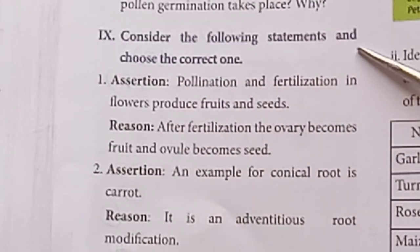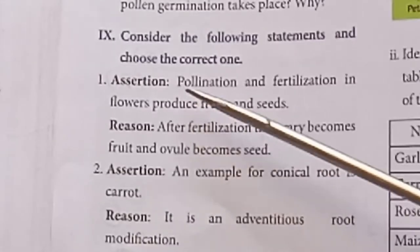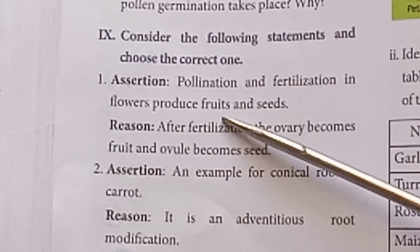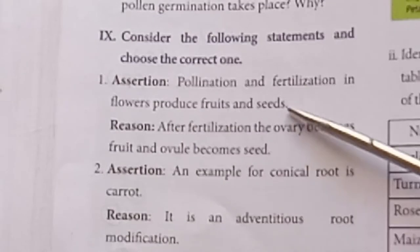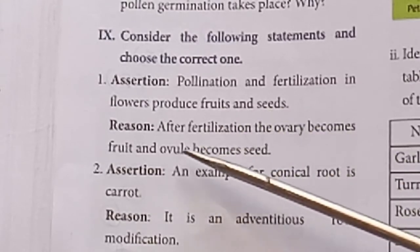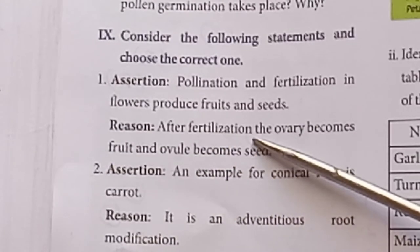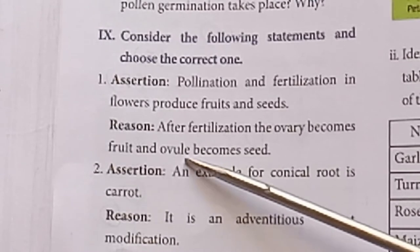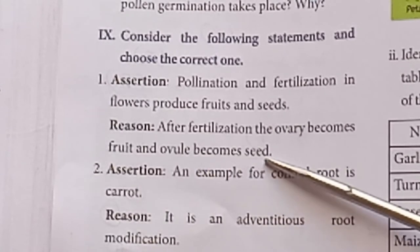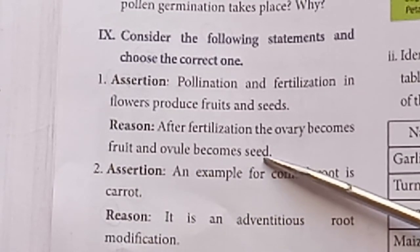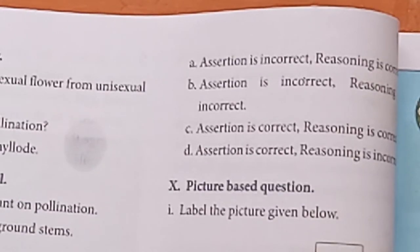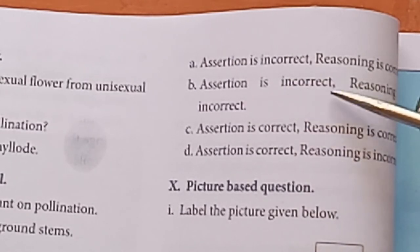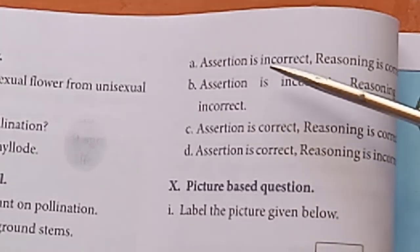Consider the following statements and choose the correct answer. Assertion: Pollination and fertilization in flowers produce fruits and seeds. Reason: After fertilization, the ovary becomes fruit and the ovule becomes seed. Both assertion and reason are correct, and the reason is the correct explanation of the assertion.